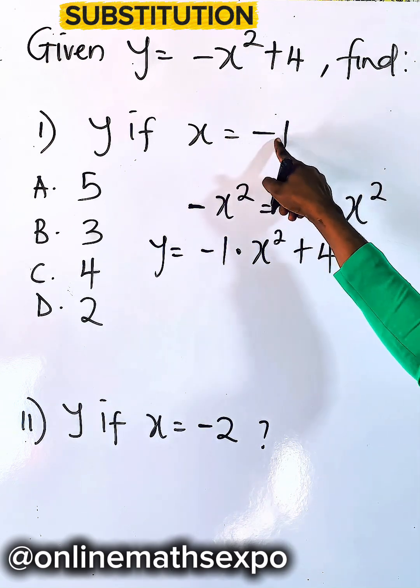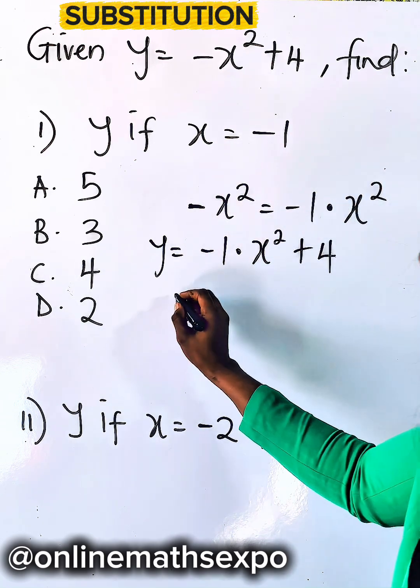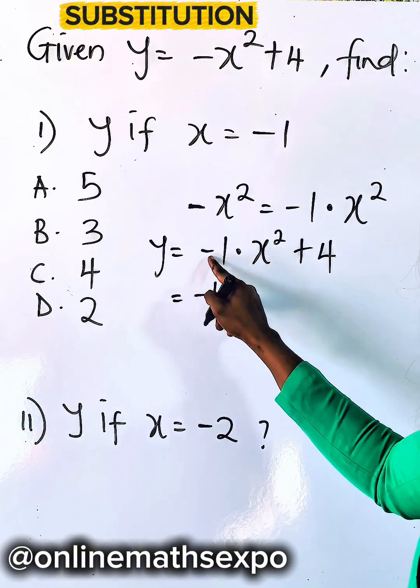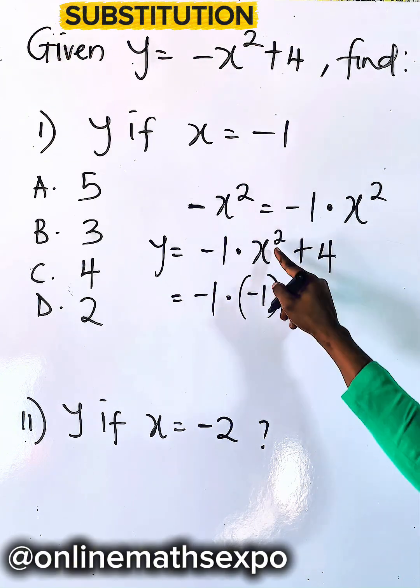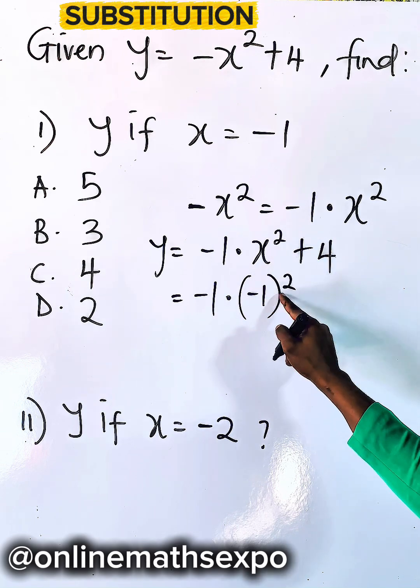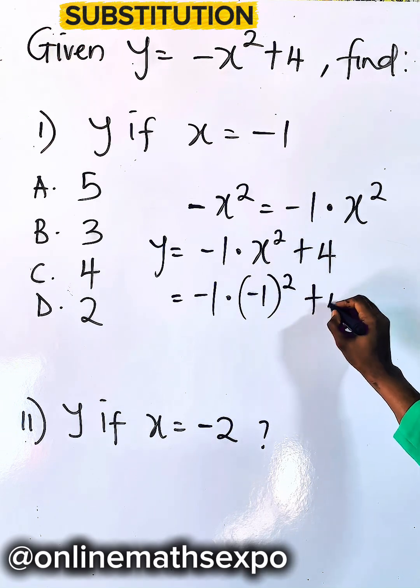Now if x is -1, we are going to replace x. So we have -1 here. For x, we replace with -1. And because x is squared, you square your value of x, then plus 4.